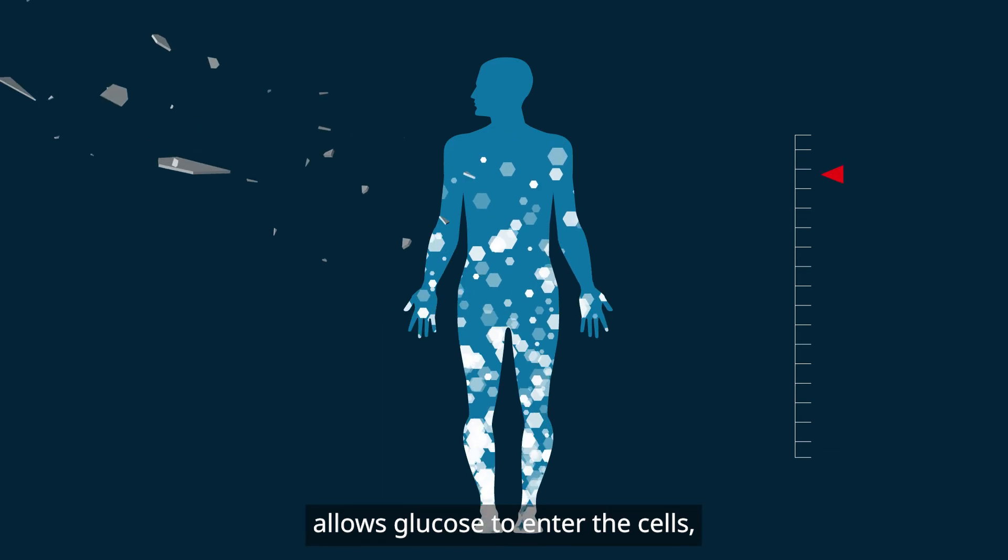After a meal, blood glucose levels rise. Insulin is released from the pancreas and the insulin action allows glucose to enter the cells, resulting in blood glucose levels falling.